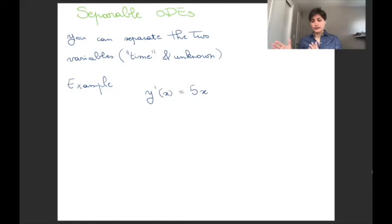One variable is the unknown function that we're looking for, the other is the time. Sometimes we call it t, sometimes we call it x. The variable doesn't matter, it's the independent variable. So if you're looking at y'(x) = 5x, the unknown is y and x is the time. This is a separable ODE and I'm going to walk you through the steps to see why it's separable and what being separable helps us with.